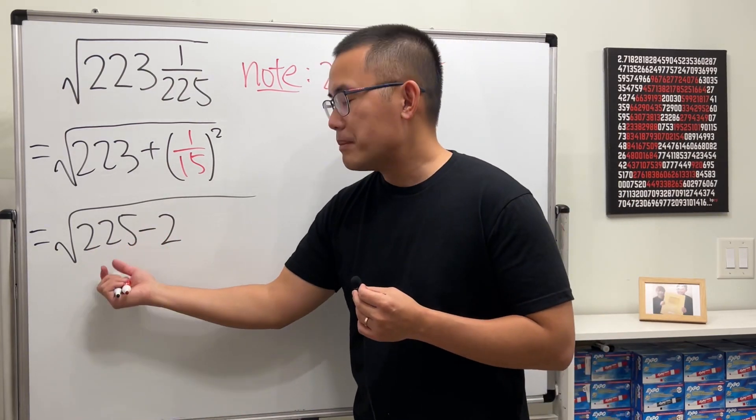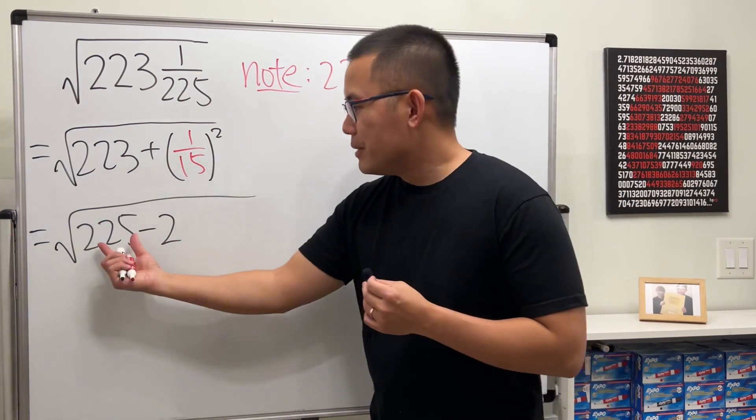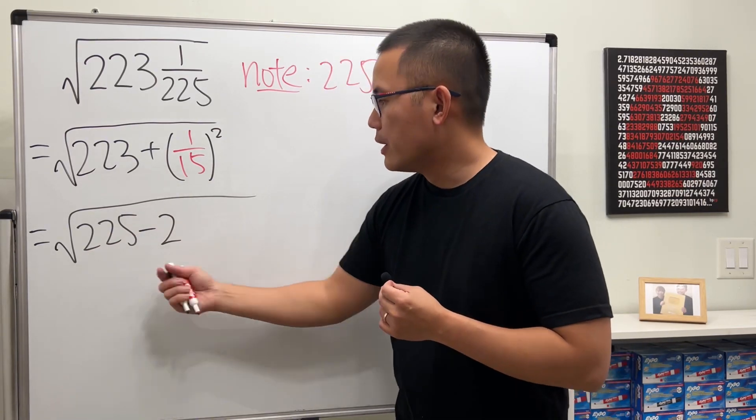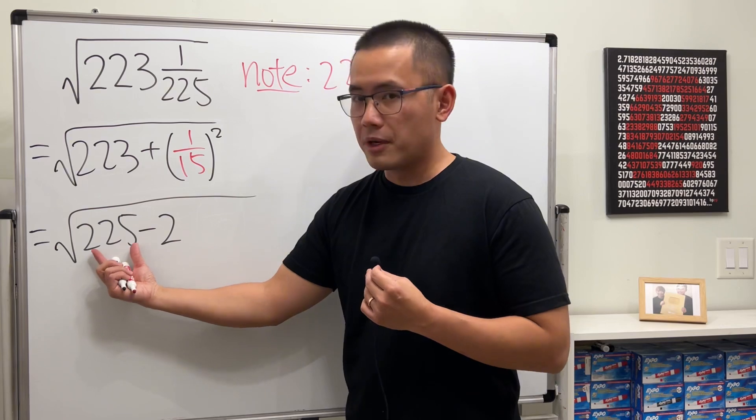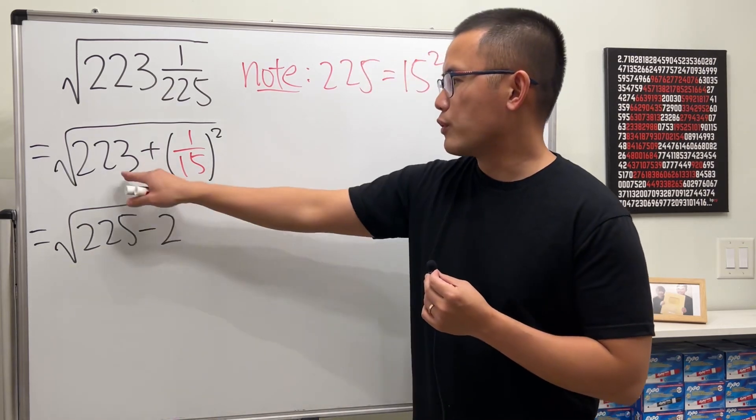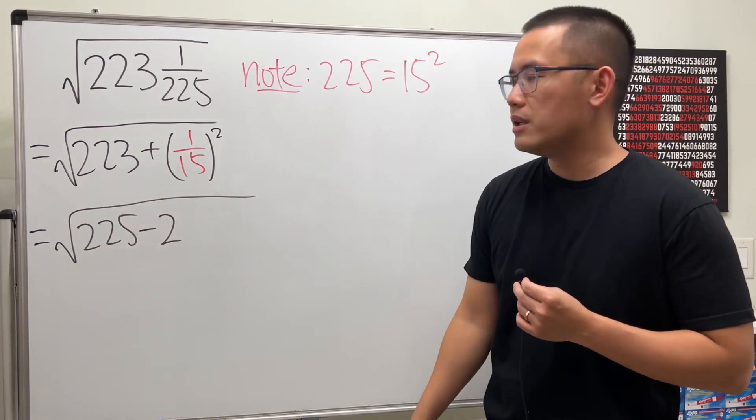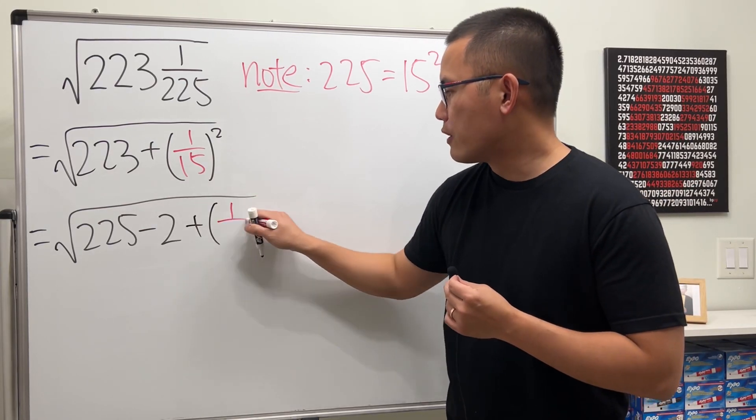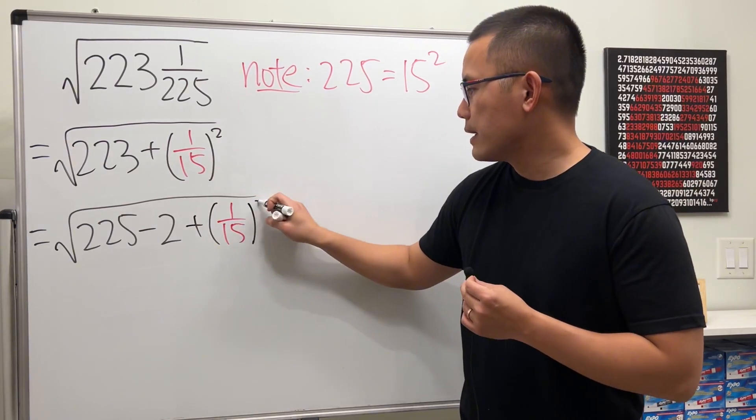That way, I can also get a perfect square here. And then minus 2, of course, we can get back to 223. And then after that, of course, we still have the plus 1 over 15 squared.